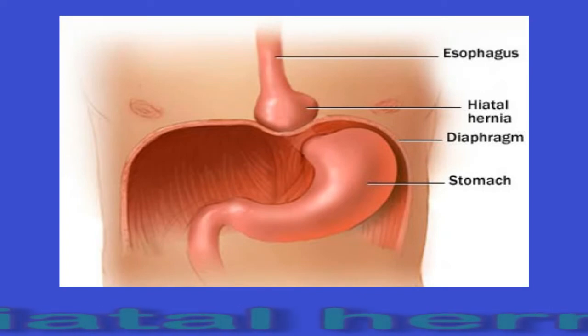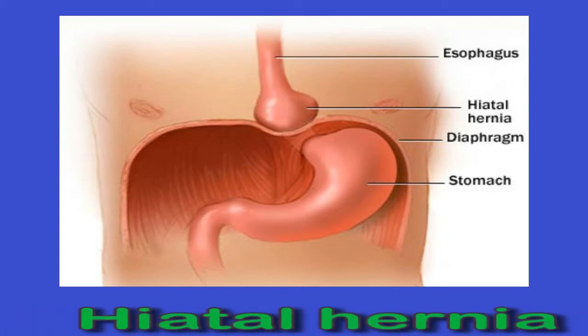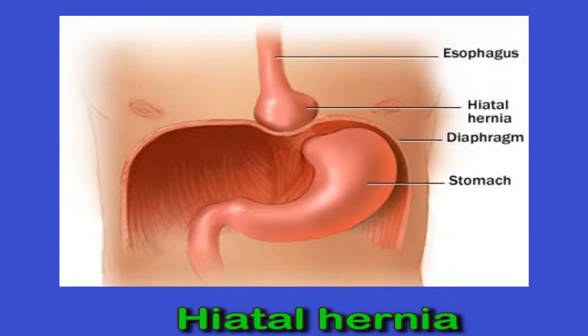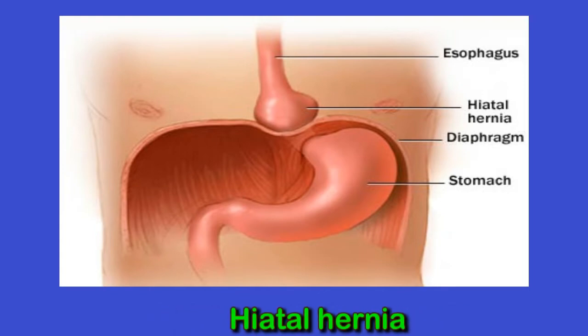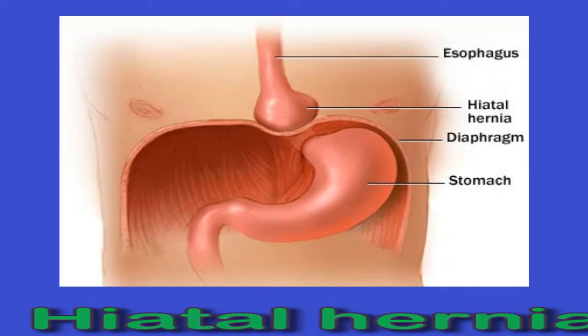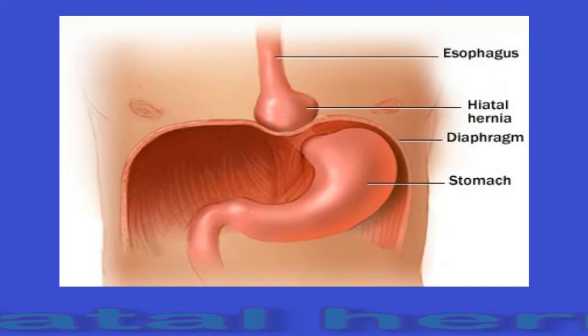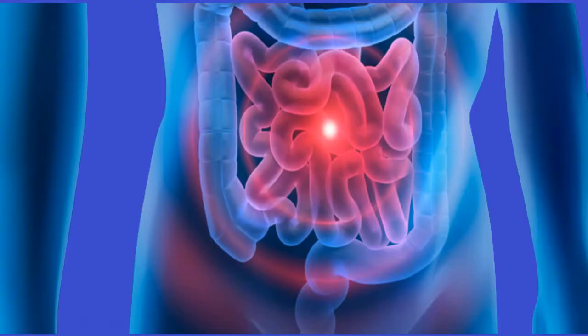Hiatal hernias: hiatal hernias occur when the top of the stomach pushes through a small gap in the diaphragm. Symptoms include difficulty swallowing, heartburn or acid reflux, tiredness, bad taste in the mouth, anemia, and burping. Treatment for hiatal hernias depends on the cause, type, and severity of the hernia. People with milder symptoms may feel better after making changes to their diet and eating schedule, such as eating smaller portions of food. Others may require medications or surgery.